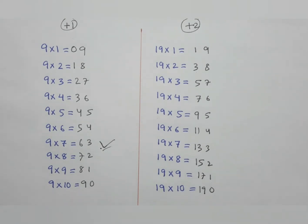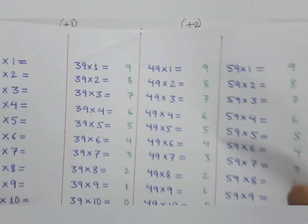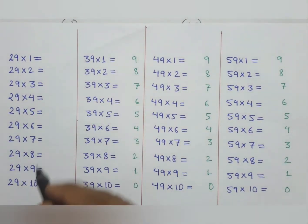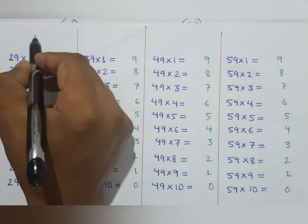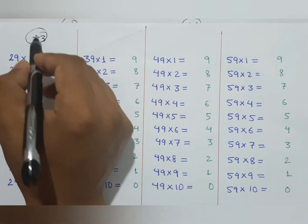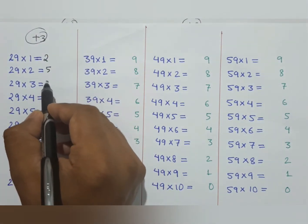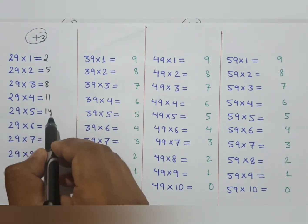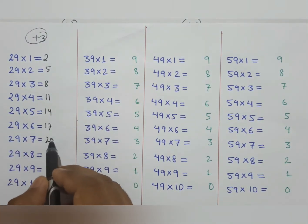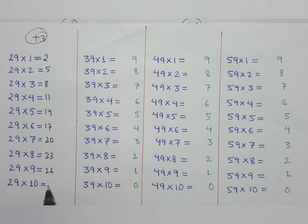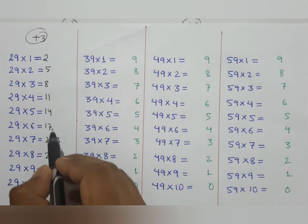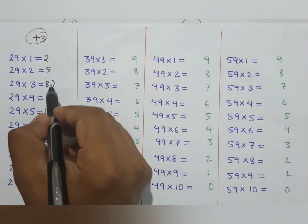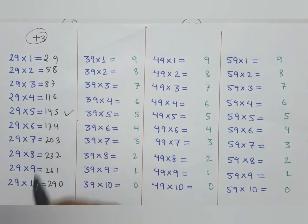The last number we reach is 29, which confirms the table is correct. This side is the same — start from 2 and add 3 each time: 2, 5, 8, 11, 14, 17, 20, 23, 26, 29. And the right side bottom is always 0, 1, 2, 3, 4, 5, 6, 7, 8, 9. So that is the 29 times table.